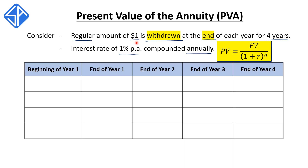We want to be able to withdraw $1 at the end of each year for four years. So at the end of year one, we want to have $1. In order to have $1 at the end of year one, we need to deposit an amount at the beginning of year one. This amount is given by the compound interest formula: it is $1 divided by 1.01 — slightly less than $1, because over the course of a year it earns 1% interest, which will grow it to $1.